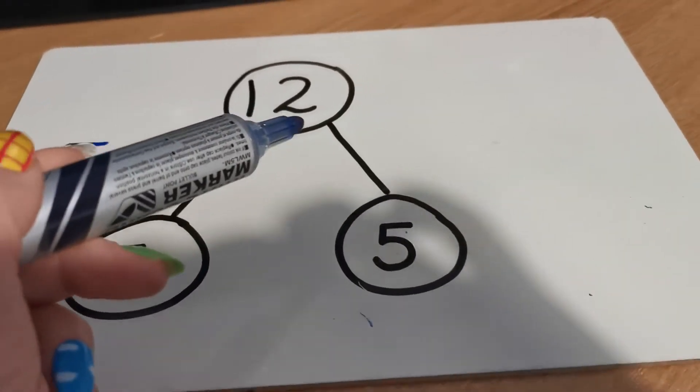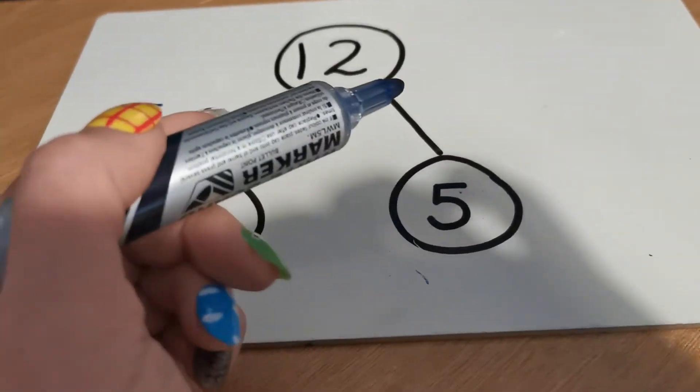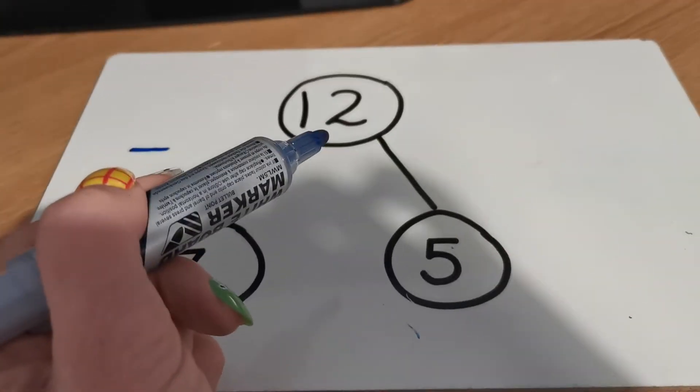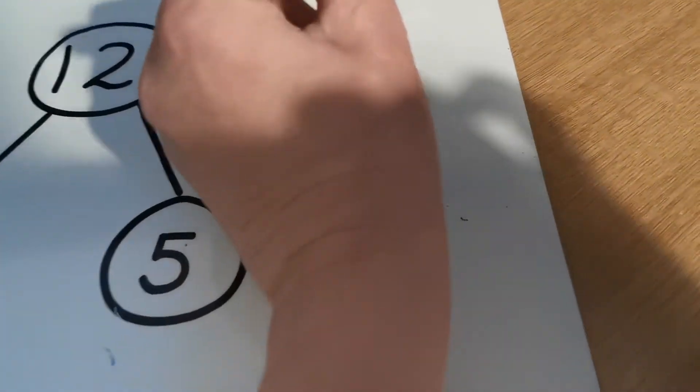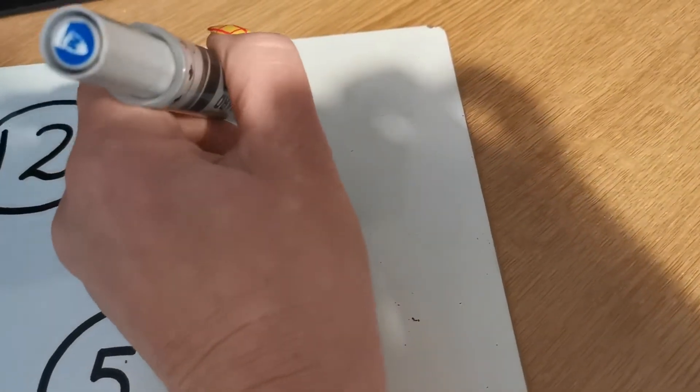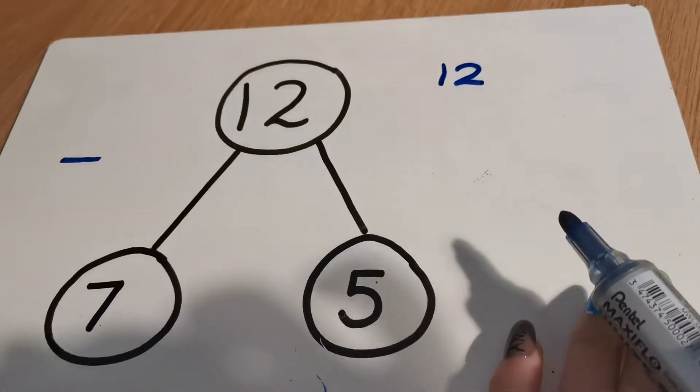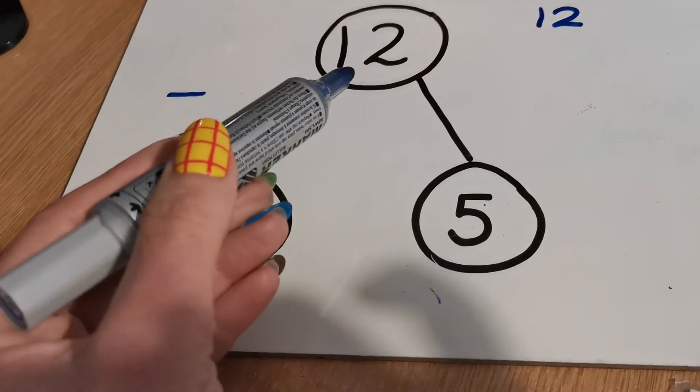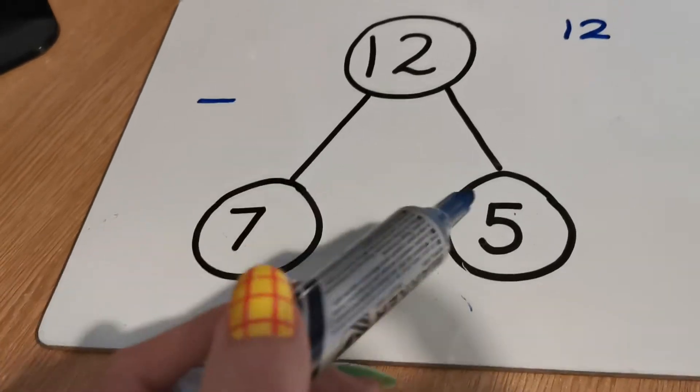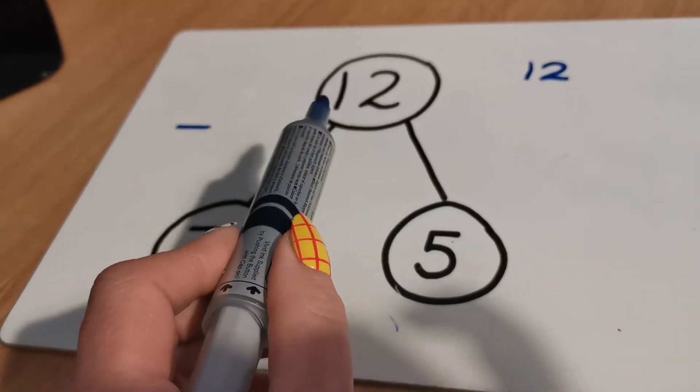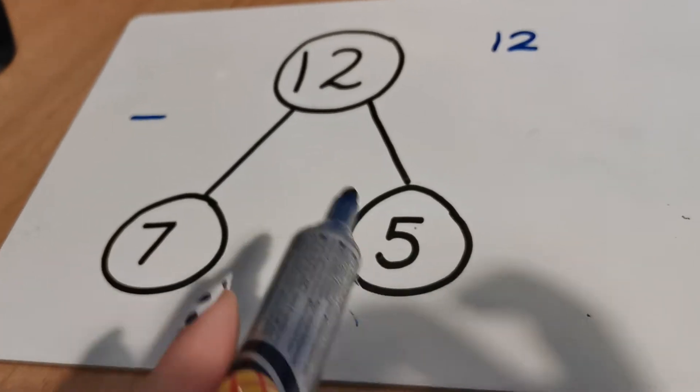You will be able to tell which number is the whole, won't you? Because remember all roads lead to the whole. So that's got all the roads going up to it. So our whole is 12 today. So I'm going to start with 12. I'm going to write this subtraction sentence on my board, starting with 12.